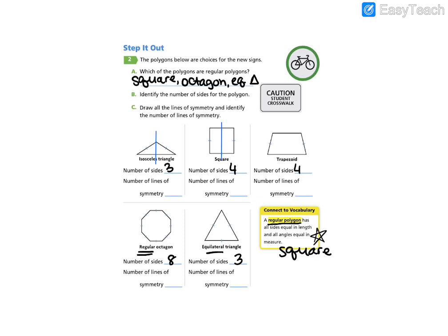So our isosceles triangle, we can cut vertically down the middle. Our square, we can go down the middle. We can go halfway there. If you remember from the last one, we can also go across its vertices. For our trapezoid, we can just go vertically down the middle.